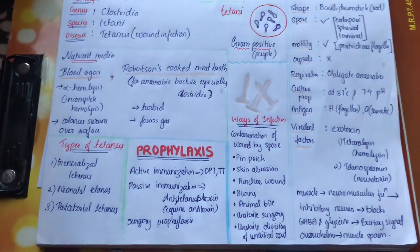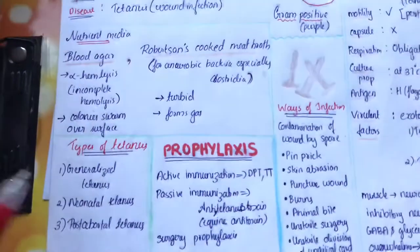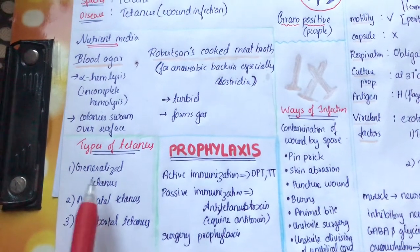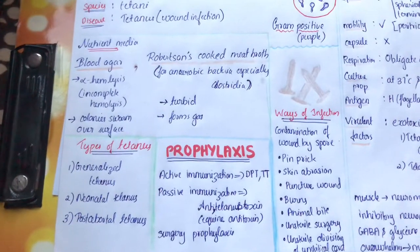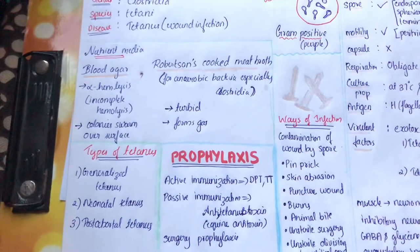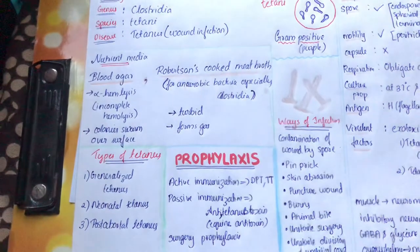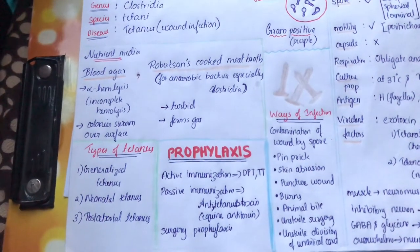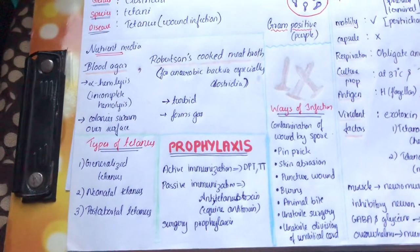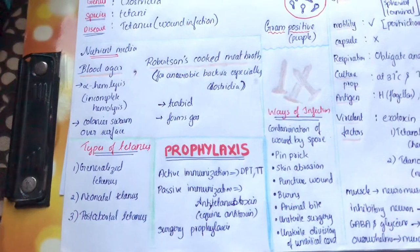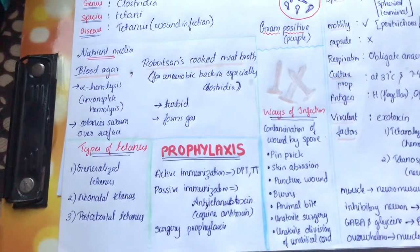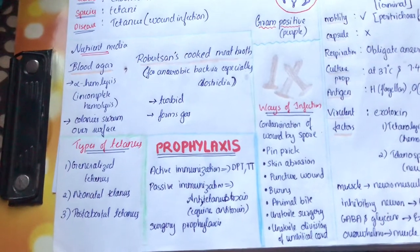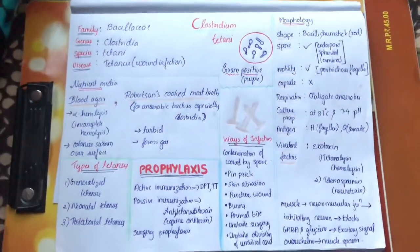Let us see the types of tetanus. There are mainly three types: generalized tetanus, neonatal tetanus, and post-abortal tetanus. Generalized tetanus symptoms include locked jaw, difficulty in swallowing, and contraction of the muscles of the back. If the muscles of the back get contracted, the body bends backward in an arc shape. When this muscle spasm interferes with the respiratory or circulatory system, it can cause death. Neonatal and post-abortal tetanus we have already discussed. Due to tetanus, a lot of lives have been lost, but we have found many vaccines against it.